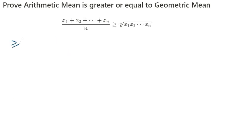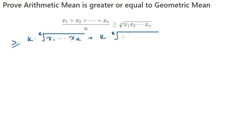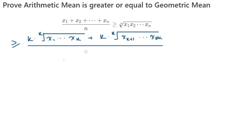So the left-hand side of the hypothesis is going to be greater than or equal to k·ᵏ√(x₁x₂⋯xₖ) + k·ᵏ√(xₖ₊₁xₖ₊₂⋯x₂ₖ), all over 2k.